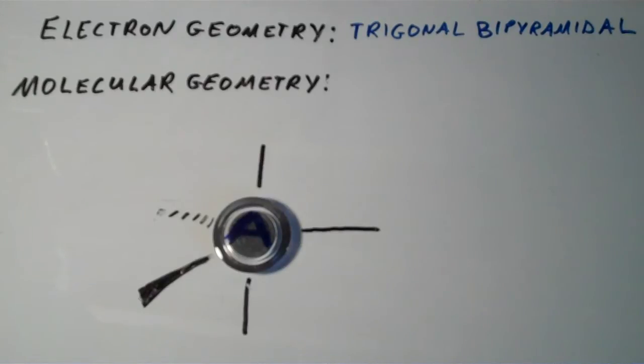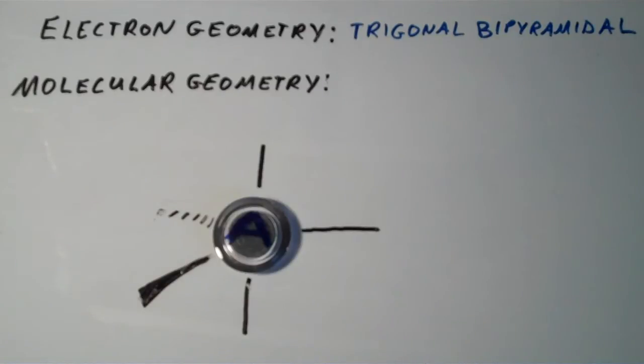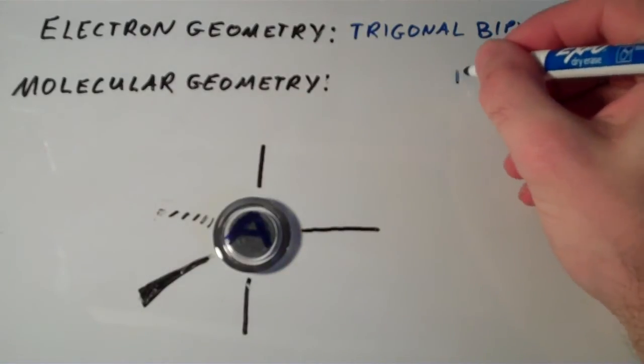If none of these electron groups are lone pairs, in other words, if all of these lines here represent a bond between two atoms, then the molecular geometry is going to be identical to the electron geometry, which is trigonal bipyramidal.